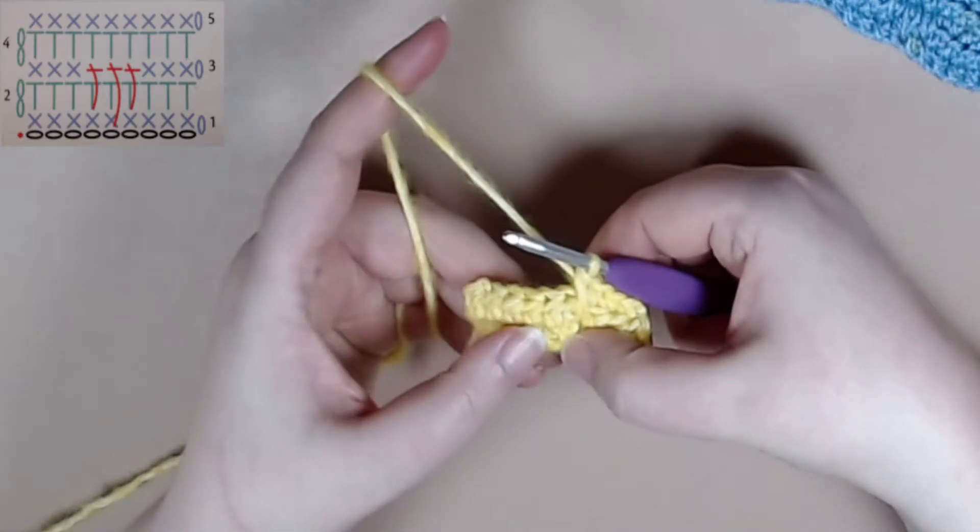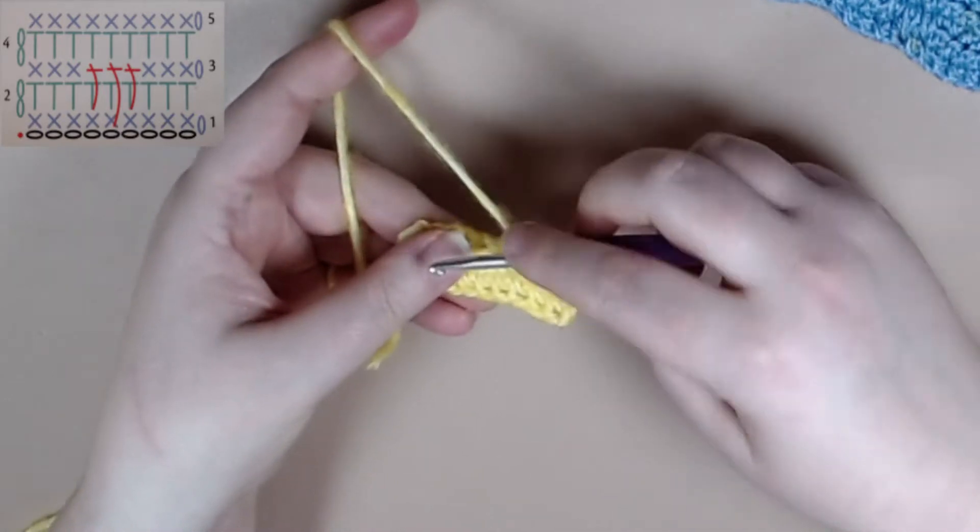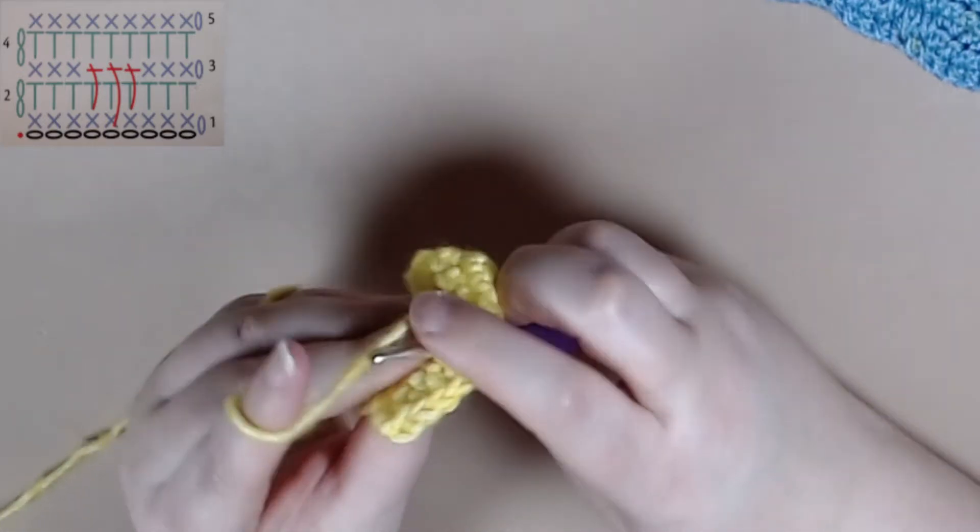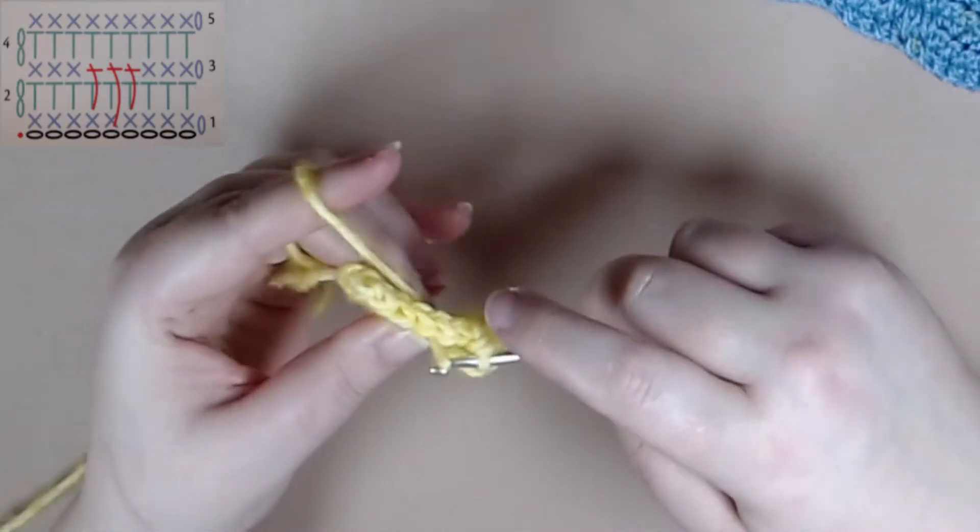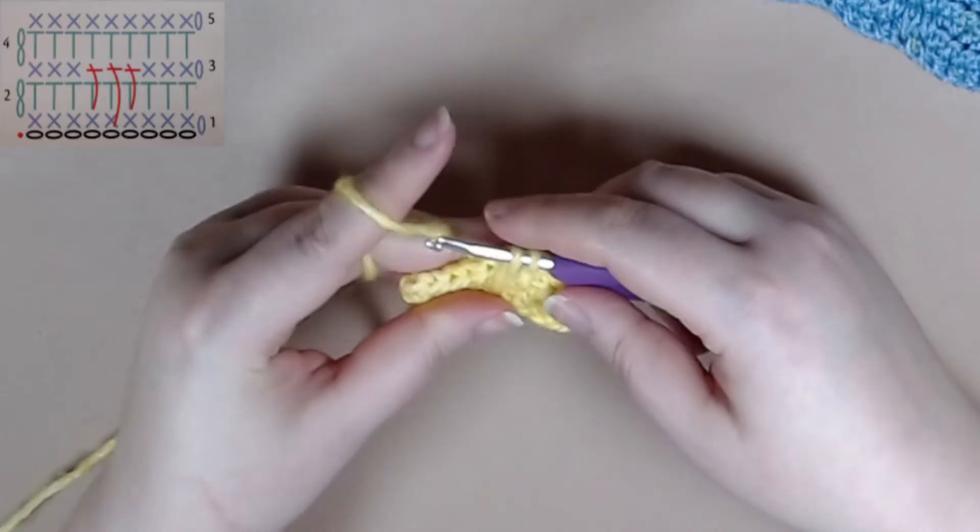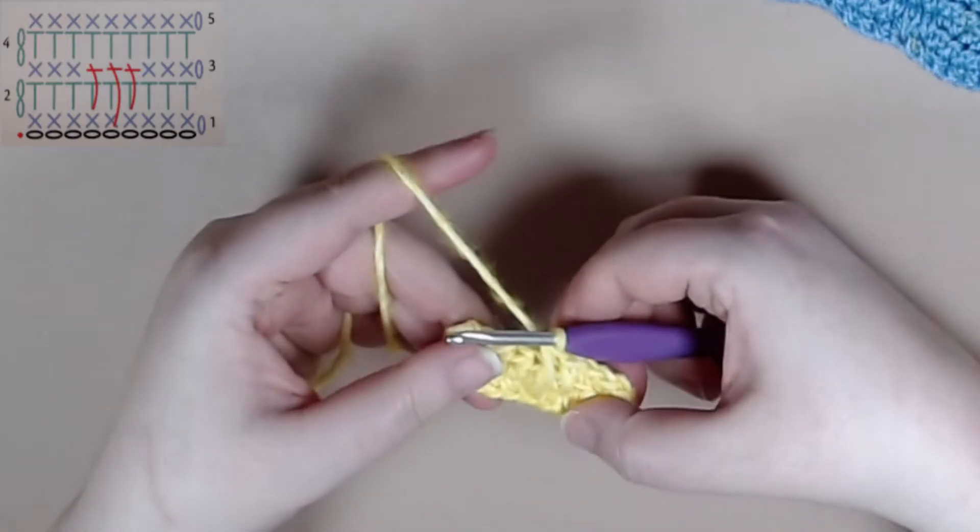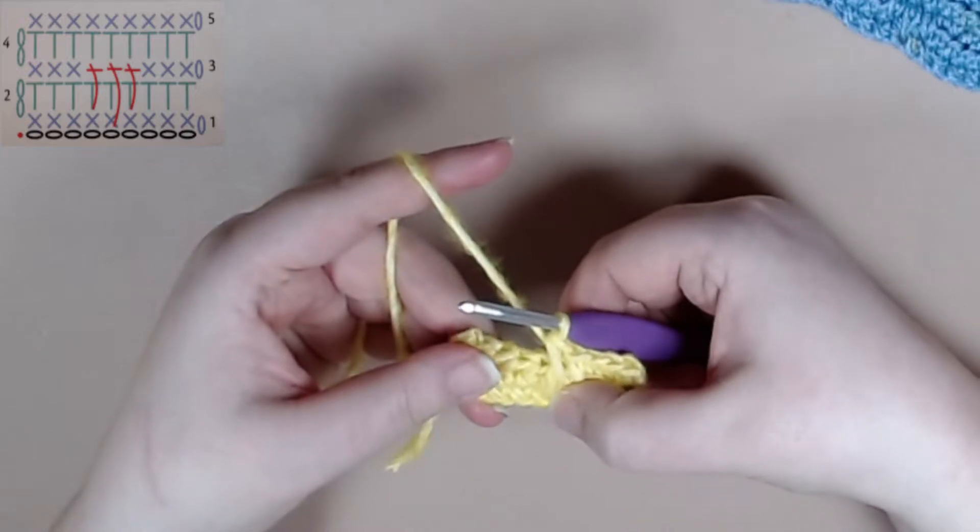So the next stitch is going to be a little bit harder because instead of doing a row below we're doing a row below below into the double crochet row from row one. Again it's a yarn over pull through pull through just like you would for a double crochet.